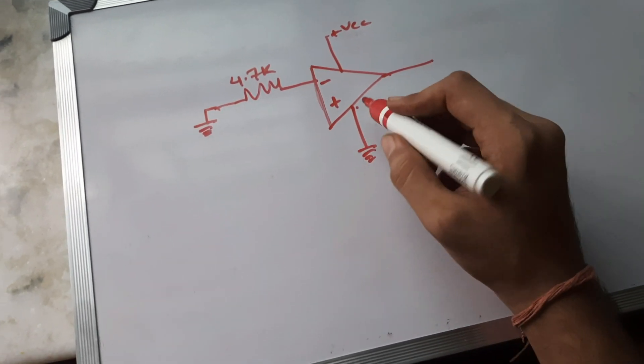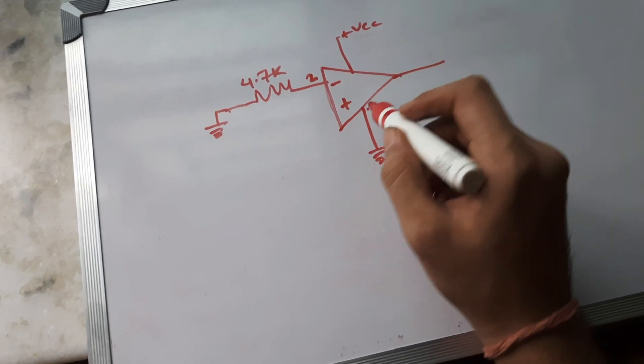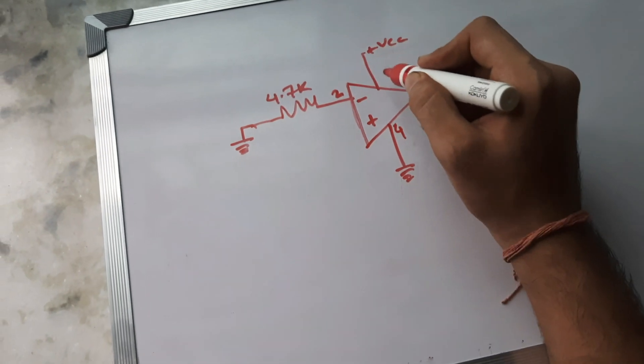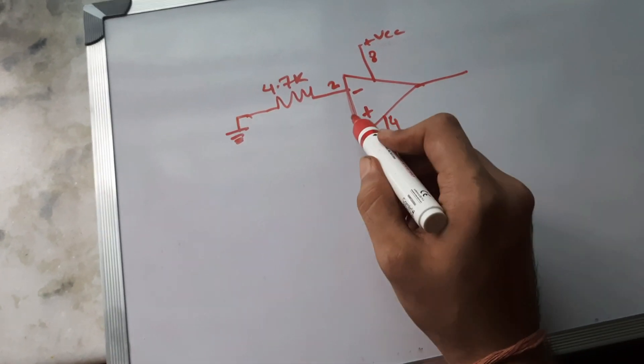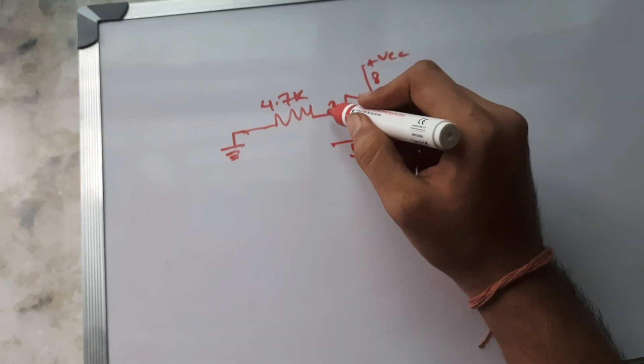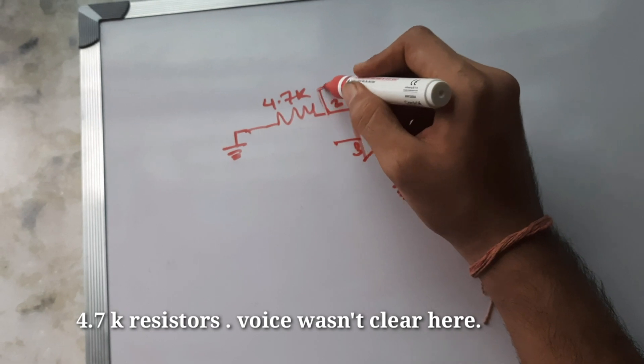Right, so I'll be writing the pin numbers beside these terminals so that it will be much clearer to you. This is the fourth pin and this is the eighth pin and this one is third pin. So there will be basically two resistors, both of the same value 4.7k, and it will be connected to the positive supply.